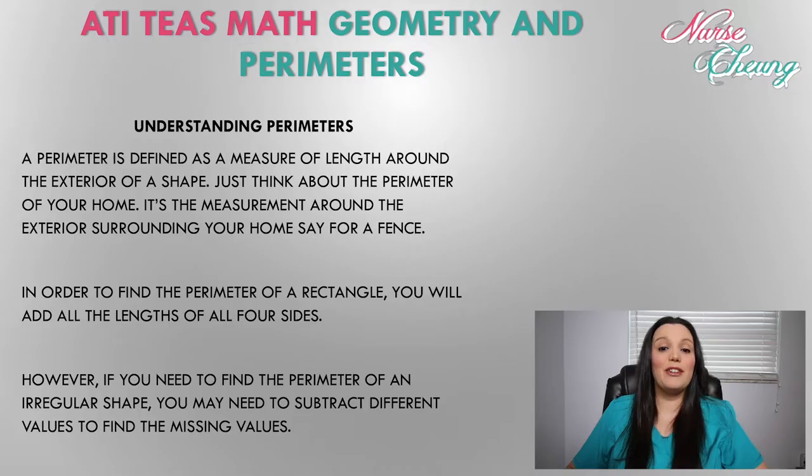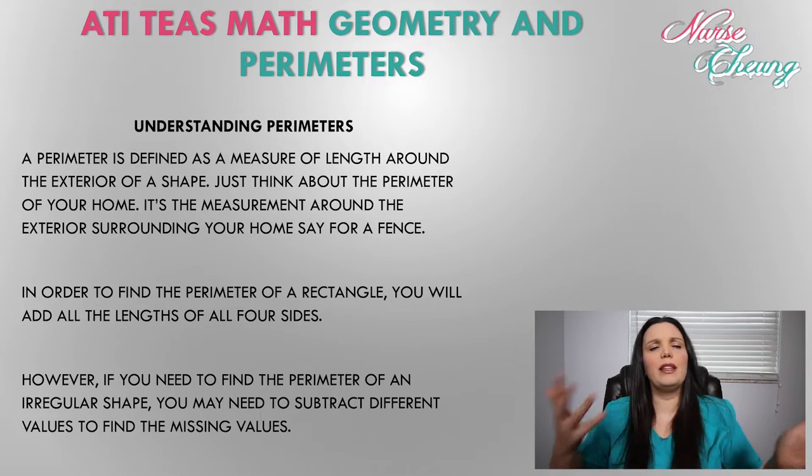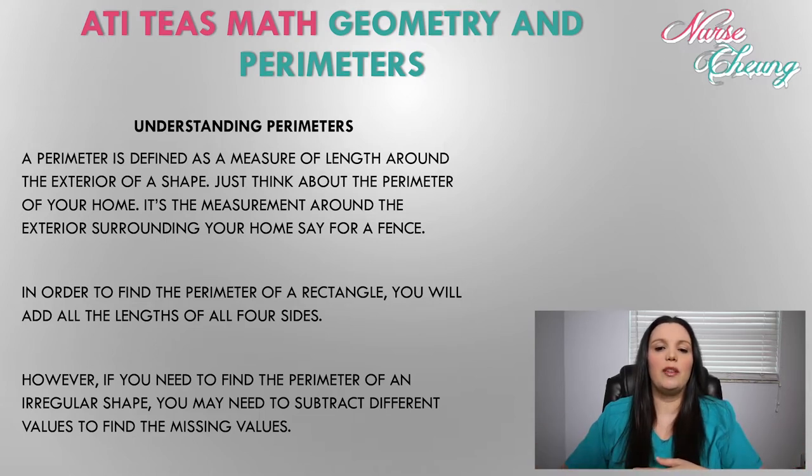Let's get started. A perimeter is defined as a measure of length around the exterior of a shape. Just think about the perimeter around your home. It's the measurement around the exterior surrounding of your home, such as your fence. In order to find the perimeter of a rectangle, you simply just need to add all four lengths together to get the correct answer.